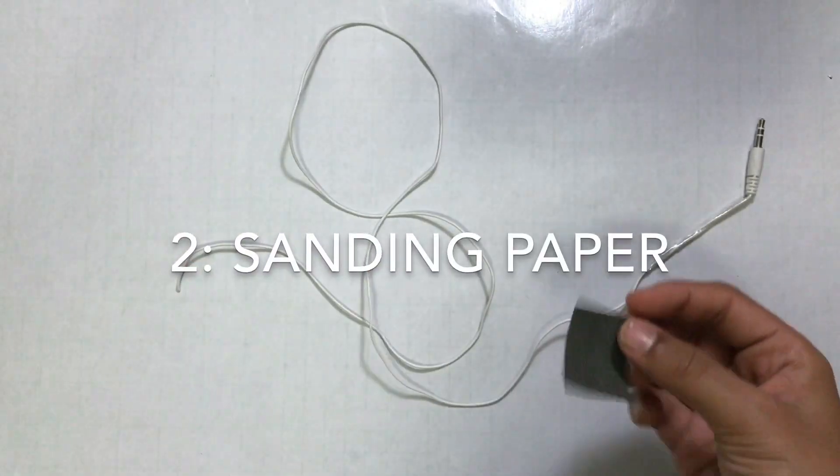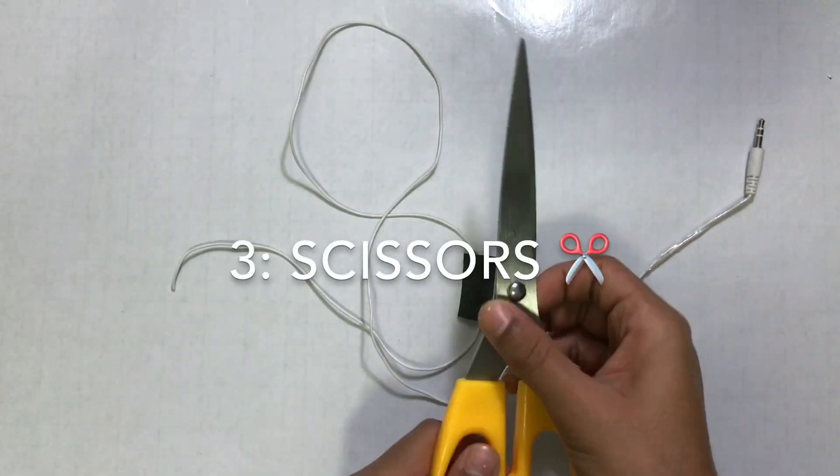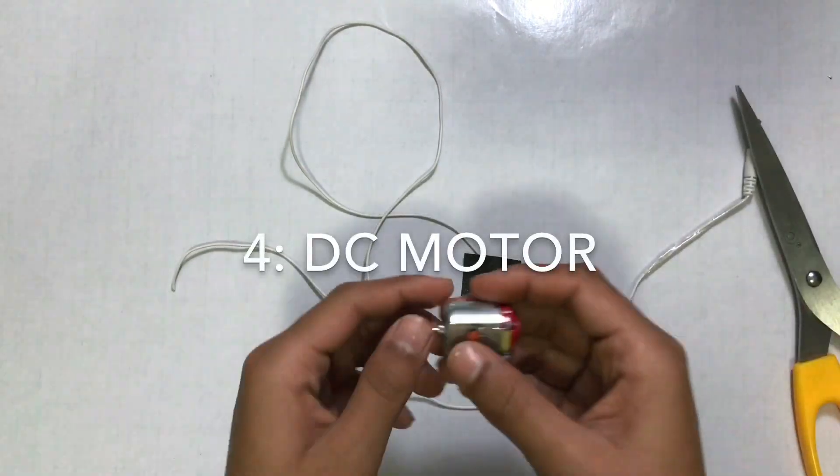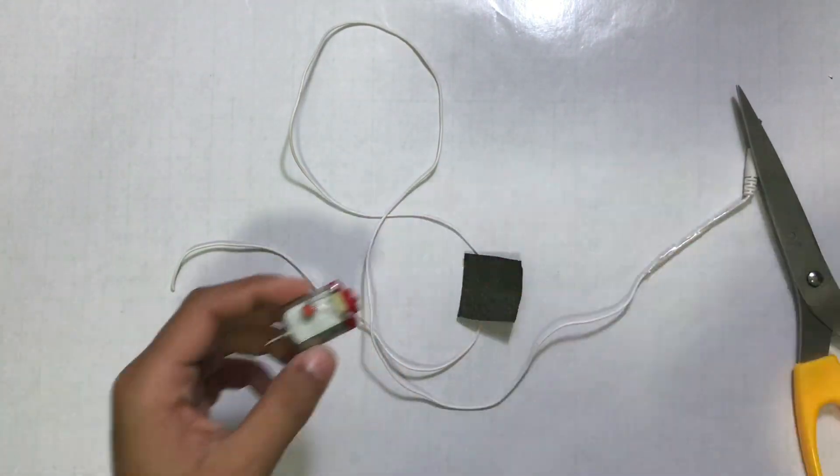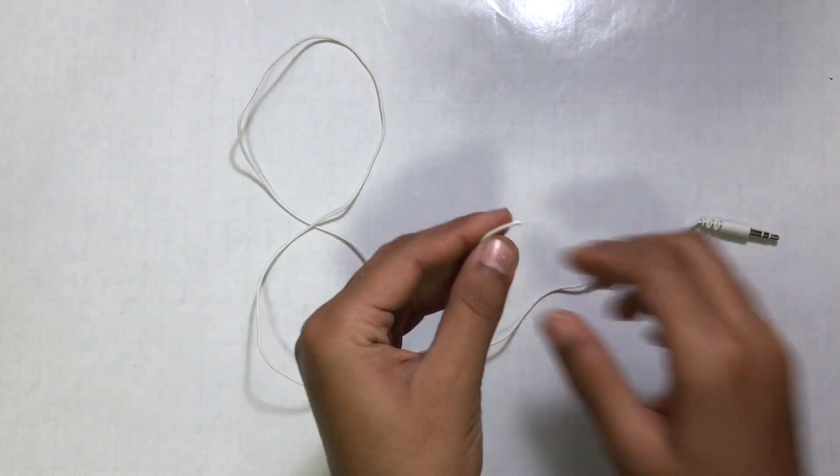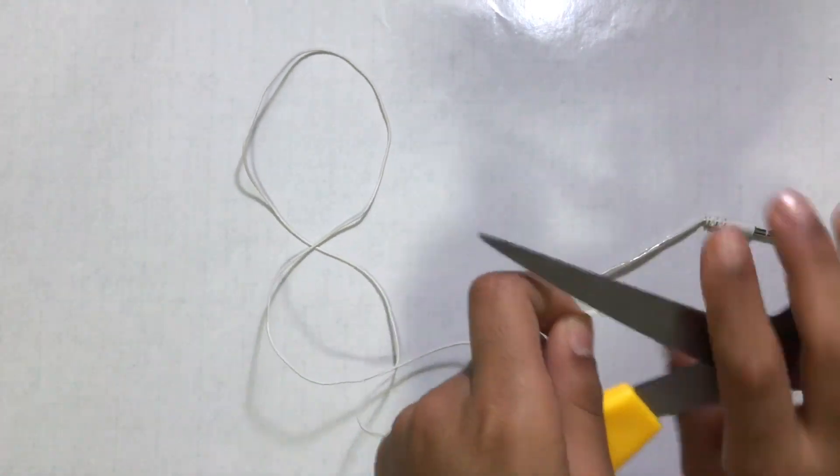To make it, you need a headphone jack, sanding paper, scissors or knife, and a DC motor.